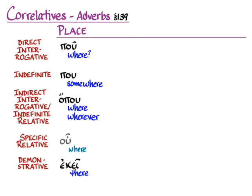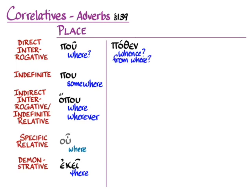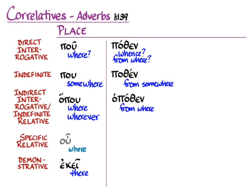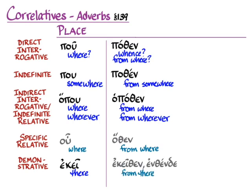Greek also has elegant little words for 'from' or 'towards' a place. We get pothen to ask 'whence?' — or 'from where' in modern usage. The enclitic indefinite form, pothen, means 'from somewhere.' The indirect interrogative is hopothen, 'from where': 'she asks from where we came.' In an indefinite relative situation it means 'from wherever.' Although not in Hanson and Quinn, you can use hothen for a specific relative situation, and ekeithen or enteuthen to mean 'from there' in a demonstrative sense. Notice the consistent -then ending throughout, which carries the idea of separation.